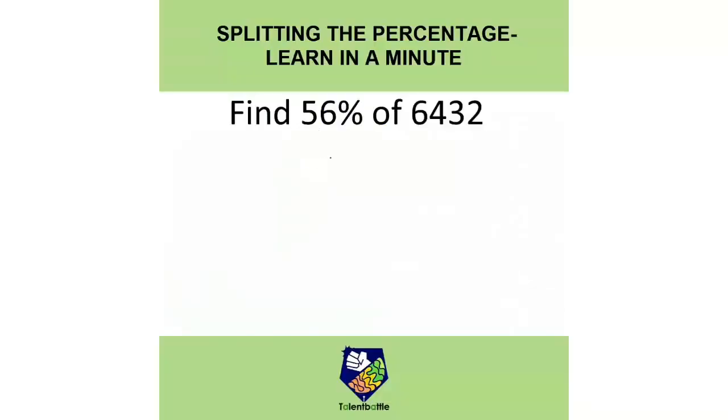56% of 6432. Normally when students calculate such type of problems what they do? They do 56% of 6432. Maybe they will cancel out two zeros and shift the point. And then this multiplication becomes very very difficult. So let us check one very easy method. This is called splitting the percentage.